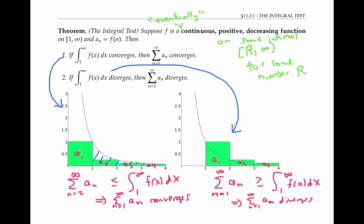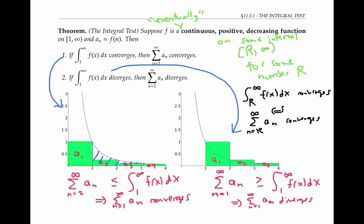This is good enough, because then I can always draw these same pictures, just starting with r instead of one in my picture, and get that the integral converges if and only if the series starting at r converges, by the same arguments we used before. But the series starting at r converges if and only if the series starting at one converges,